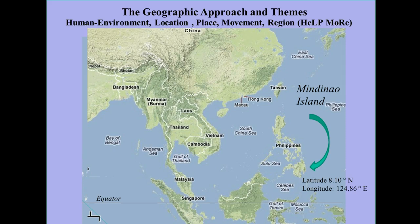This is an example of applying the five themes of geography. Any study of geography will incorporate these themes. The first is human-environment interactions, followed by location, place — the unique descriptors of a particular locale — movement, and finally region. I've provided you with a mnemonic device to help you remember this.